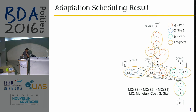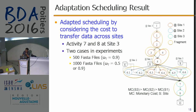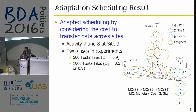Activities 6.3 and 6.4 generate less data compared with 6.5 and 6.6. It takes more time to transfer data from site 3 to site 4 than from site 4 to site 3. Thus, we can schedule activity 7 and activity 8 to site 3 to reduce the execution time.